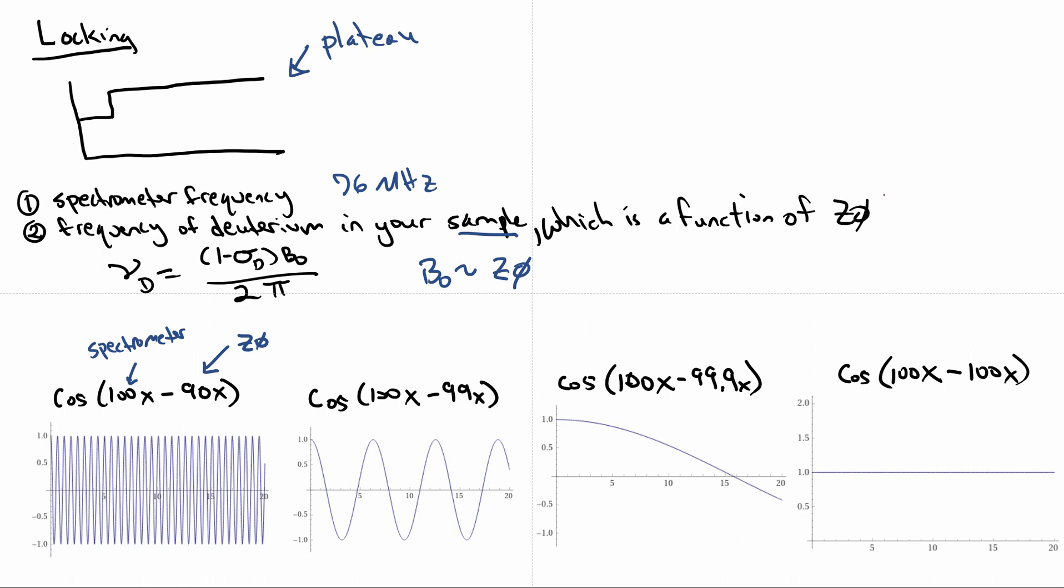Remember Z0 was the global magnetic field parameter. So the magnetic field that your proton or deuterium sees is proportional to Z0. And so we say the frequency of that deuterium is proportional to B0, and I've added in the shielding constant. So if we look at, here's the frequency of the spectrometer, and then here's the frequency of the deuterium, and we're kind of moving it around because of Z0, and we take that difference and plot it.